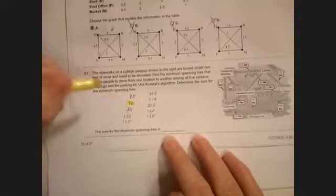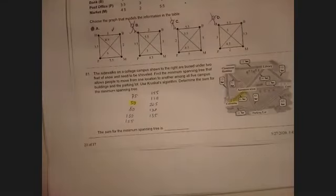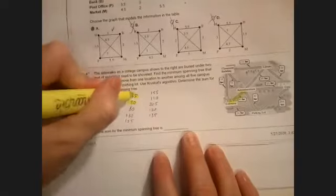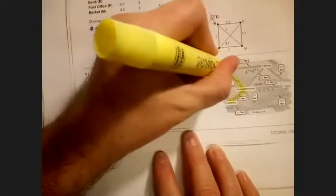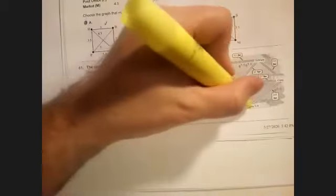That connects these two. Now I have to find the next shortest, which is 75. Now I move up to the next one, which is 80. Does 80 make a circuit? It does not, so it is good.